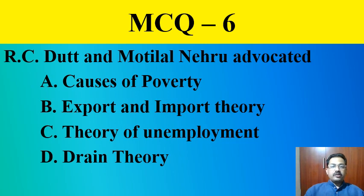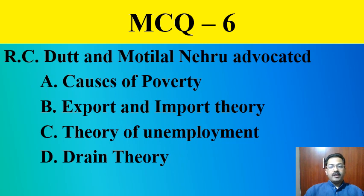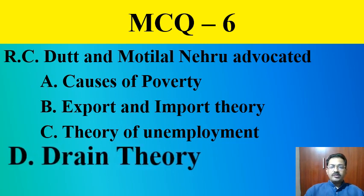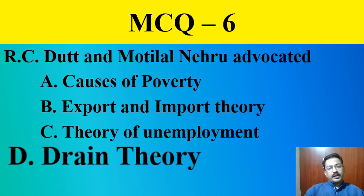MCQ question number six: R.C. Dutt and Motilal Nehru advocated — causes of poverty export and import theory, theory of unemployment, or drain theory. The correct answer is drain theory. Congratulations — keep marking your marks.